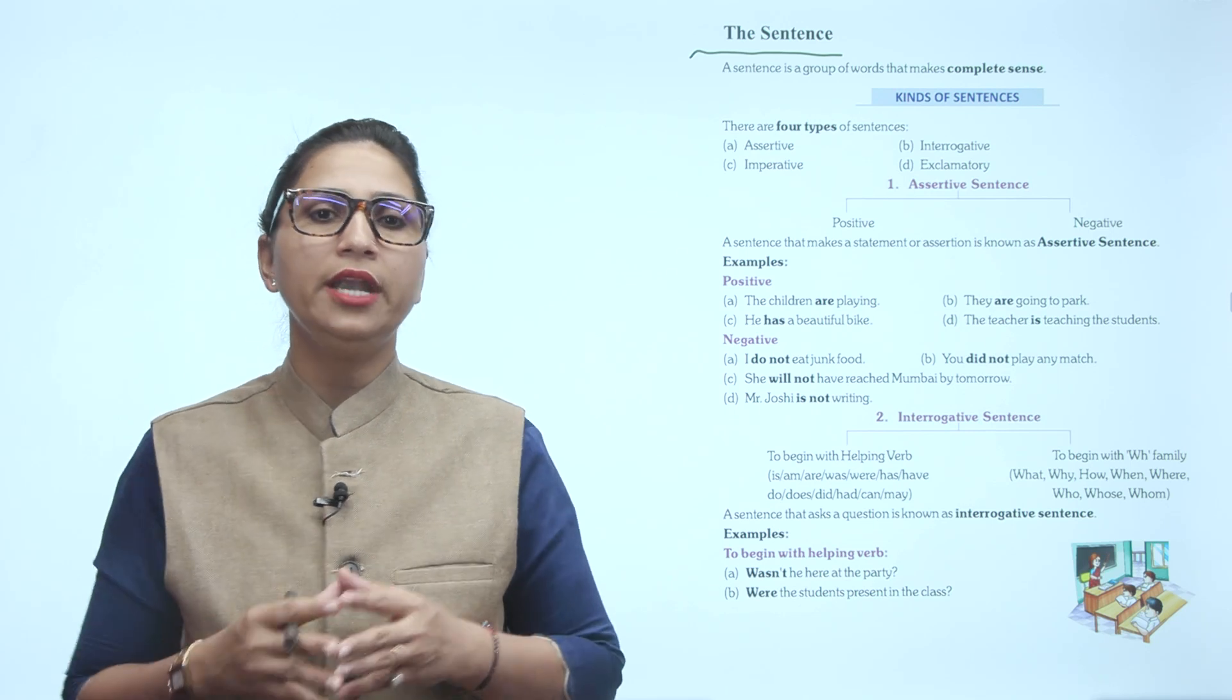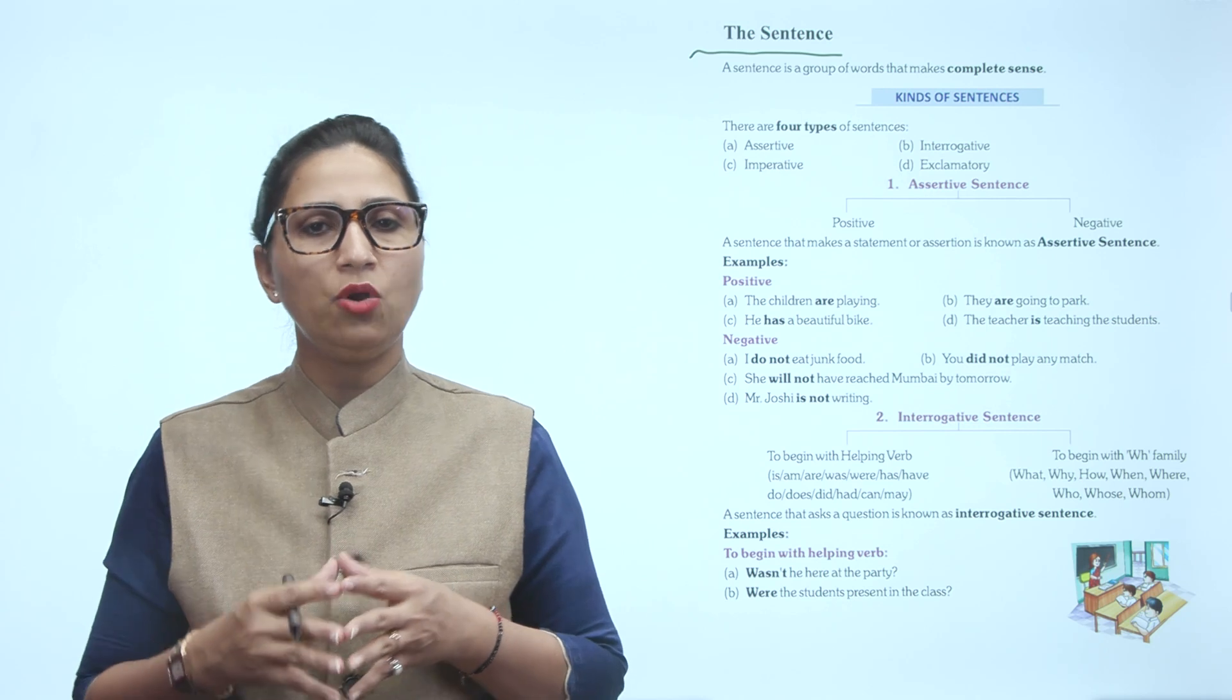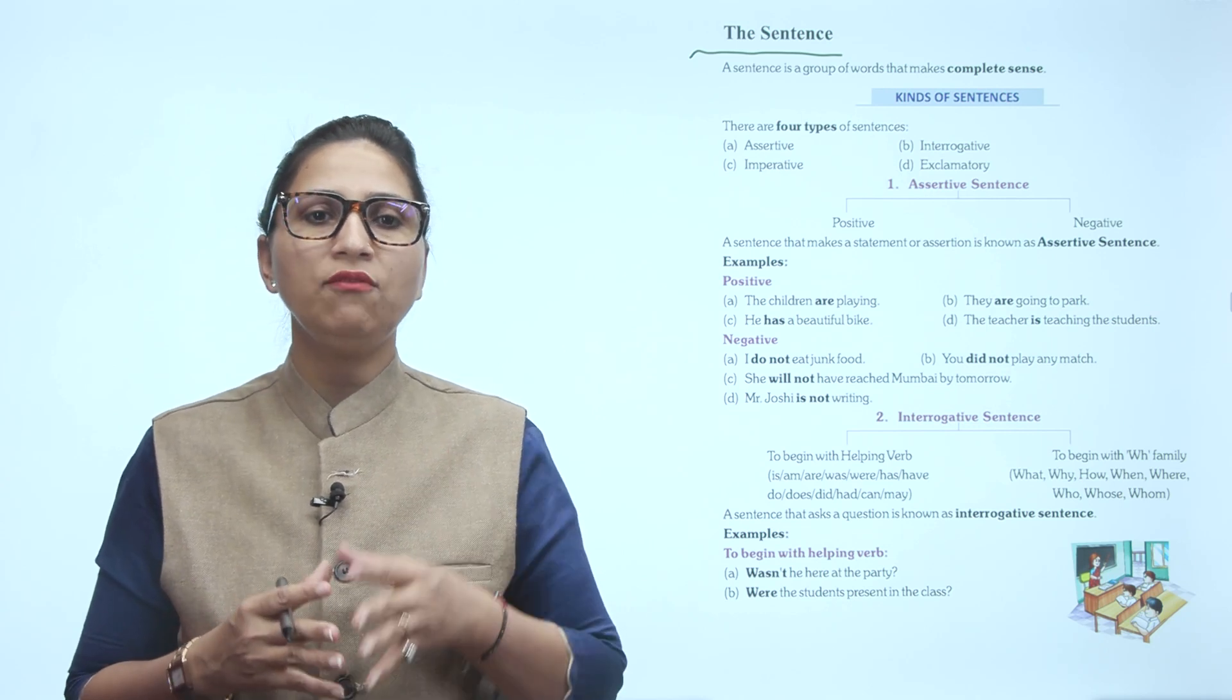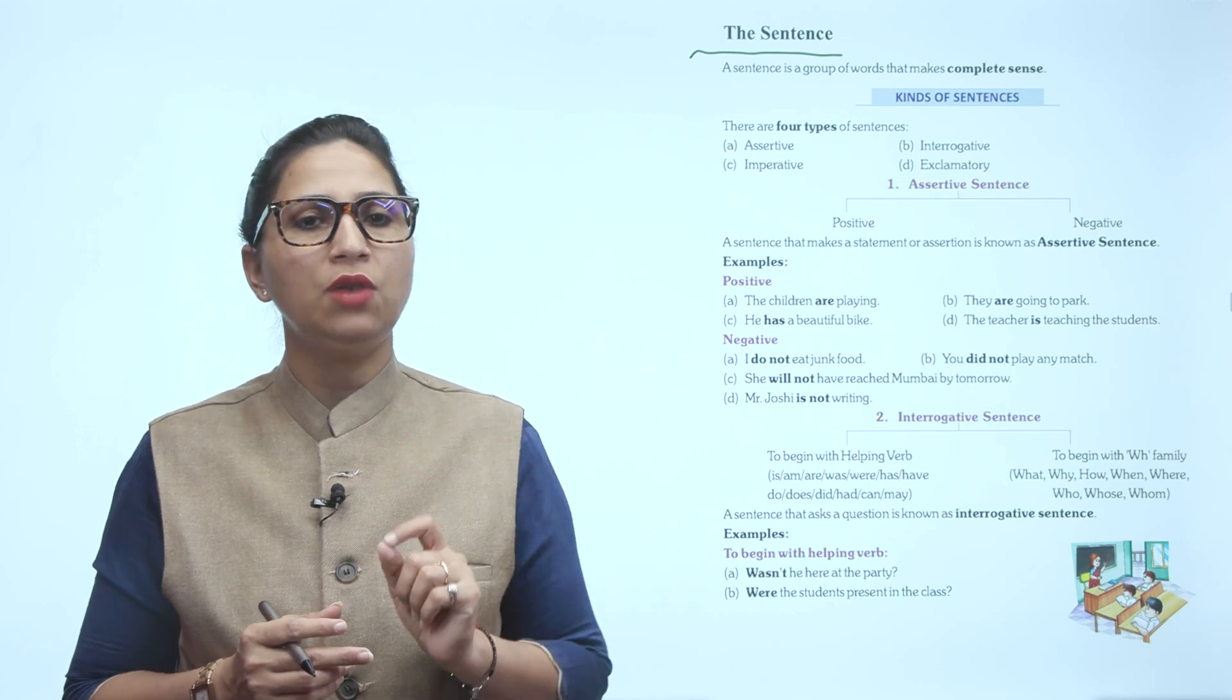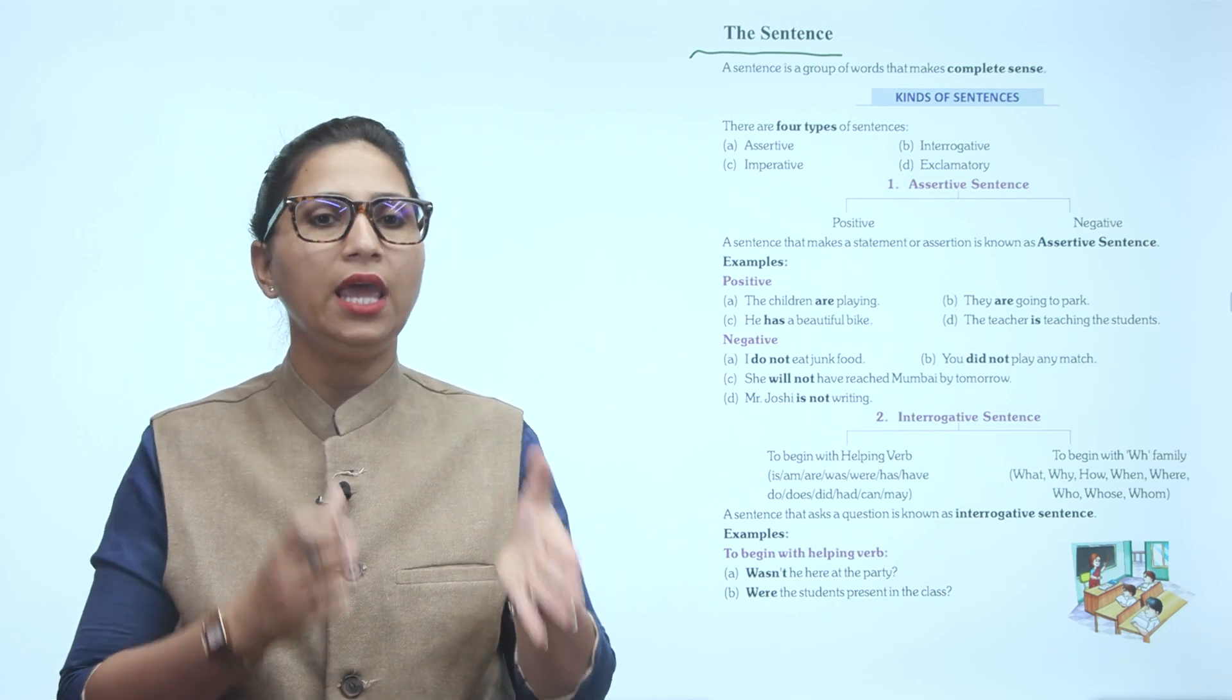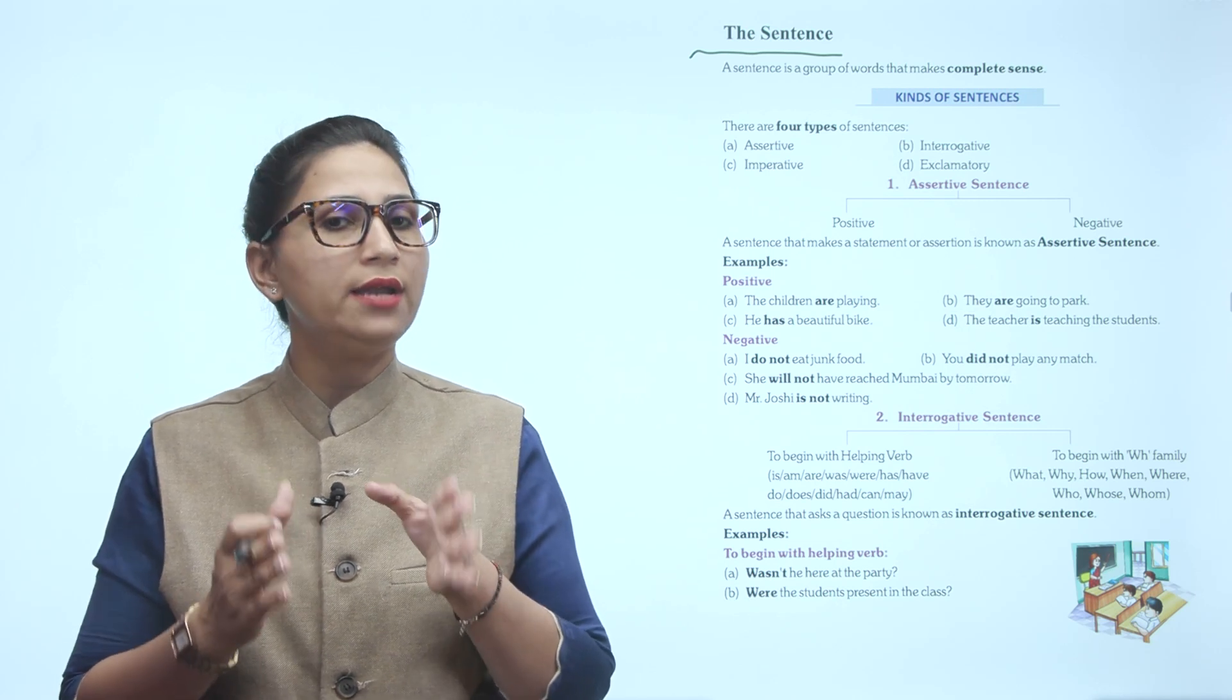Second, we are going to read about interrogative sentences. To begin with helping verbs—interrogative sentences always begin with helping verbs like is, am, was, were, has, have, do, does, did, had, can, may.